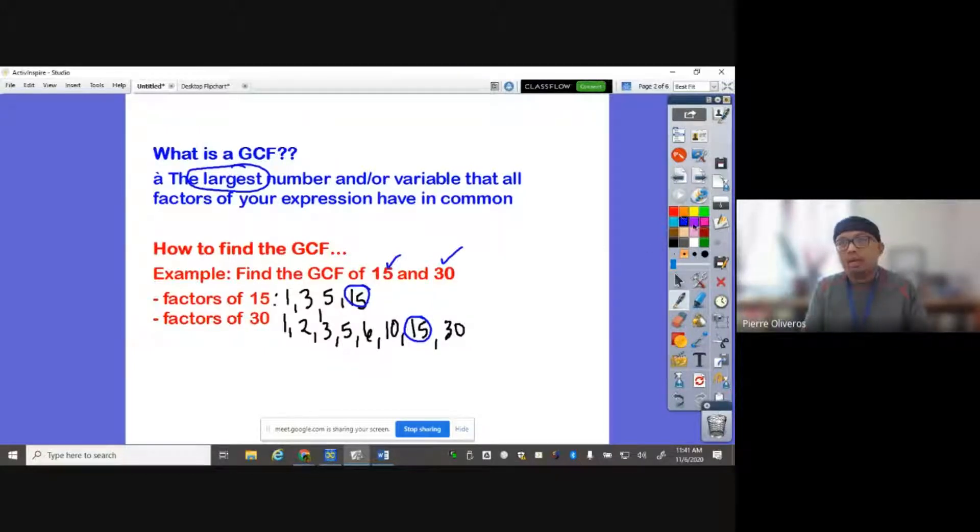So what if we have a variable? For example, we have find the GCF of 2x squared and 10x. Now, for this case here, you'd have to do it separately. The coefficient is 2 and 10. What's the GCF of 2 and 10? The GCF of 2 and 10 is just 2. Now, with x squared and x, which one is smaller? x squared or x? X only, because the exponent of this x here is 1. So the GCF is 2x or 2x to the 1.